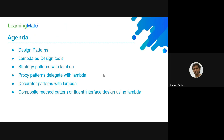Let's go over a few design patterns and how you can write them using lambdas. You need to study the others on your own. The first design pattern we want to talk about is the iterator design pattern. In Java we already have an example of this — the Java iterator. Can anyone tell me what the iterator does?